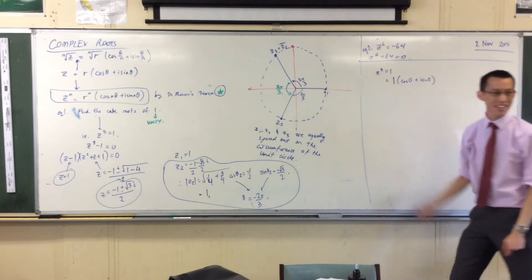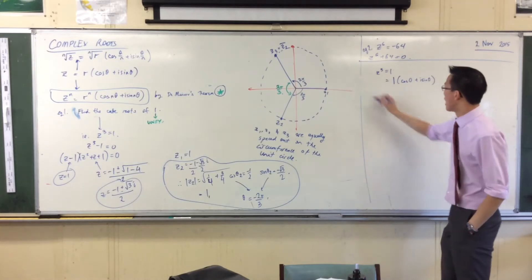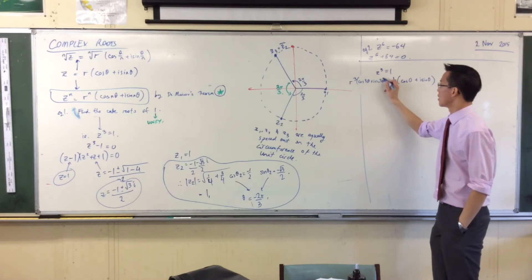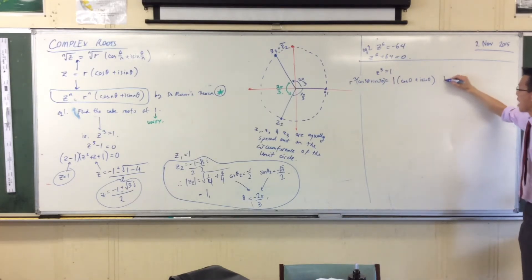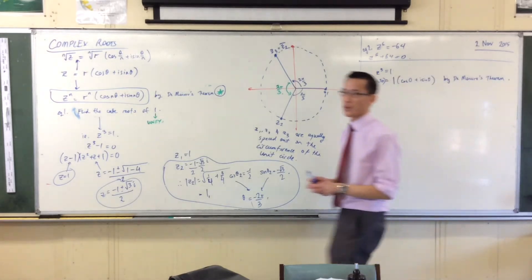On the left-hand side, I'm going to use De Moivre's theorem and write it out with n equals 3, so I have r cubed times cos(3θ) plus i·sin(3θ). I know that because of this theorem that I can quote.